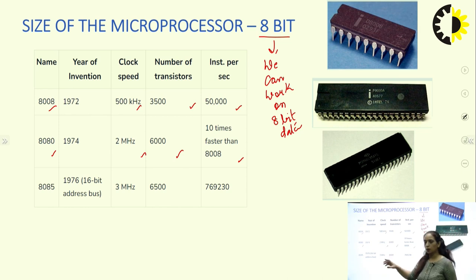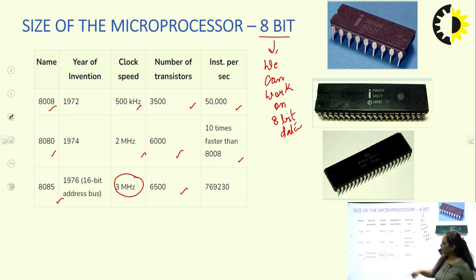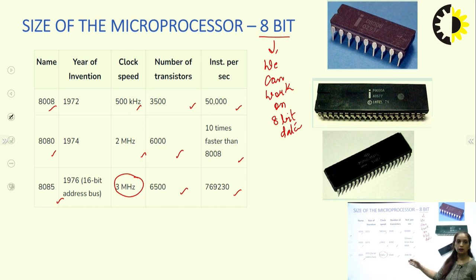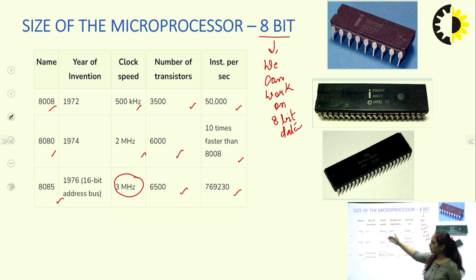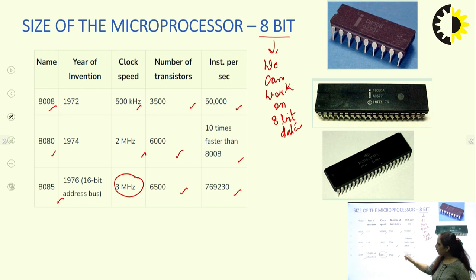The most popular IC we are going to study in this course is the Intel 8085. It has 16 address lines, was invented in 1976, works on 3 megahertz frequency, has 6500 transistors, and can process approximately 8 lakh instructions per second. In this 8-bit processor series, you can see that clock speed is increasing, instructions per second are increasing, and the number of transistors is also increasing — a bit of modification in each new IC.